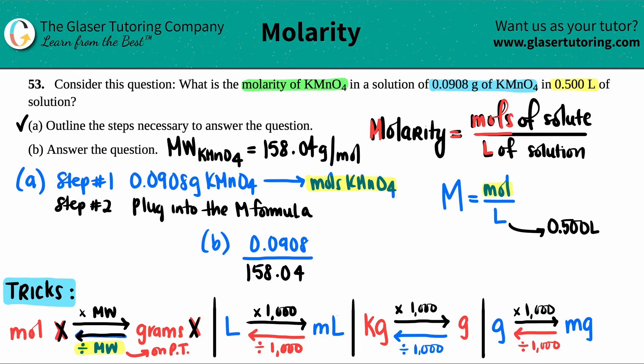Our answer should technically have three sig figs because this number has three sig figs. So let's do it. 0.0908 divided by 158.04. Really small number. Rounding to three sig figs, we get 5.75 times 10 to the negative fourth, and that's the moles.